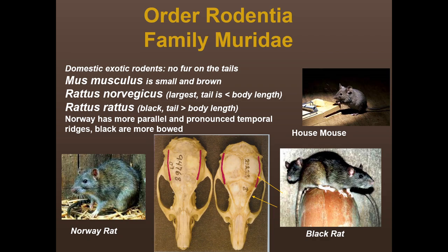Next we move into Family Muridae. A really important characteristic of this family is that these are the domestic/exotic rodents and they do not have fur on their tails. Mus musculus is our house mouse — small and brown, without the bicolored pattern seen in wild mice. We also have Rattus norvegicus, the Norway rat, and Rattus rattus, the black rat. The Norway rat is the largest, with a tail shorter than body length, whereas the black rat's tail is greater than body length — that tail length is a good way to tell them apart.